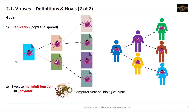Now let's have a look at the goals of viruses. We have two main goals. The first goal is replication — to copy and spread itself. The second goal is to execute potentially harmful functions, which we also call the payload. Here you can see the exponential spread of viruses, which I compare to human viruses. One document with the virus copies itself into additional documents; these are then started and they spread again and again — exponential spread.